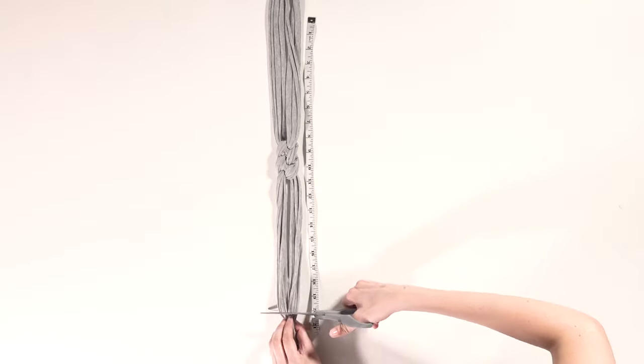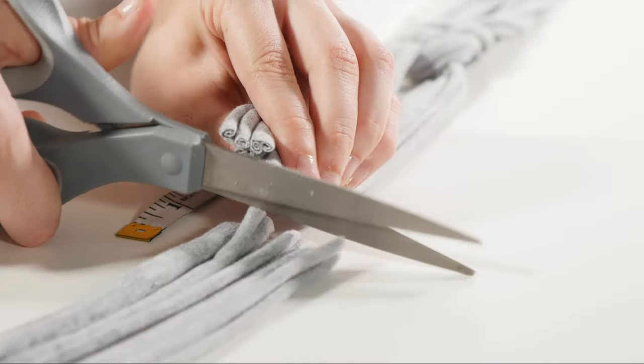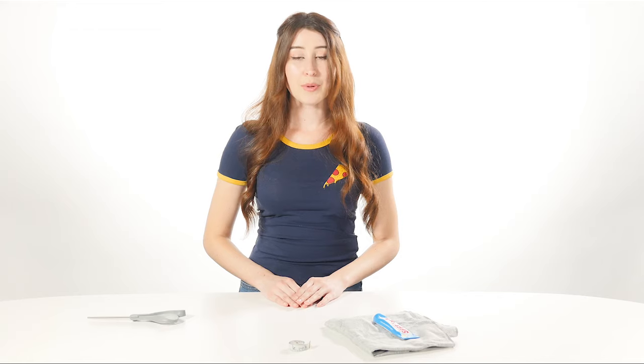The next thing you have to do is take your measurement around your head. My head measures about 20 inches so I'm going to lay out my headband and trim the ends to make it 20 inches. I'm cutting the ends evenly so that the knot is in the middle of the headband. But if you want the knot to be off-center, just trim one side shorter than the other.